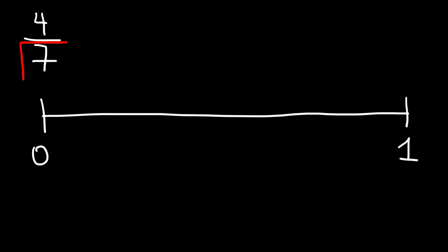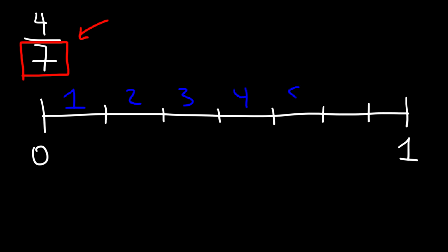What we need to do is focus on the number 7, and we need to break up the number line into seven equal spaces. So this is going to be one, two, three, four, five, six, and seven. My drawing may not be perfect, but you get the picture — seven equal spaces.